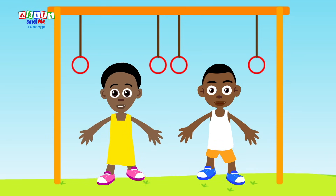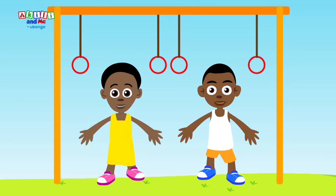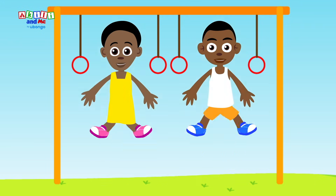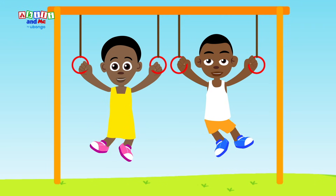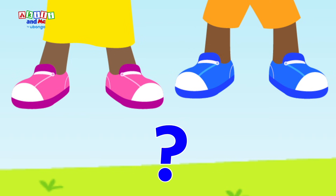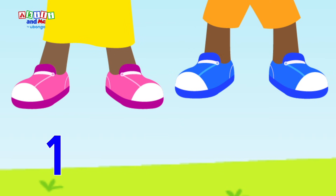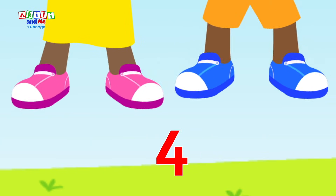Two kids I can see, just like you and me. Each one has two shoes, two shoes on their feet. How many shoes are there? Let's count! One, two, three, four! Four, four, four shoes!